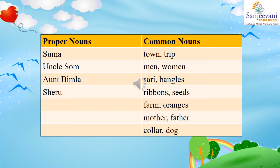'And a new collar for her dog, Sheru.' Collar is something a dog wears around its neck, so collar is a common noun. Dog is the name of an animal — like lion or peacock, these are all common nouns — so dog is also a common noun. Sheru is a specific name given to Suma's dog. Hence, Sheru is a proper noun — the name of a specific animal — so we will write Sheru in the proper noun column.